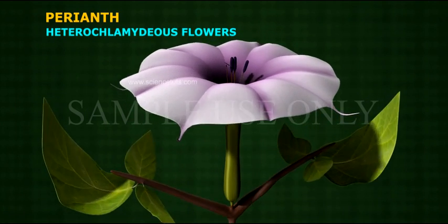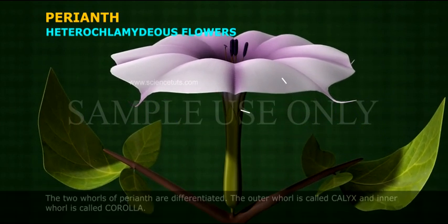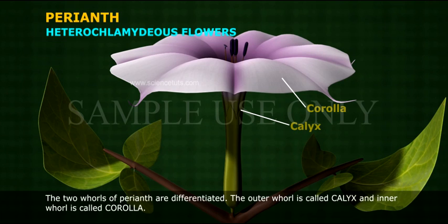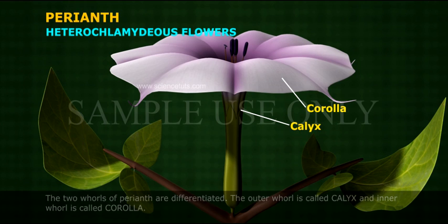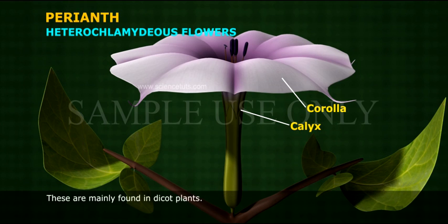Heterochlamydeous flowers: The two whorls of Perianth are differentiated. The outer whorl is called Calyx and the inner whorl is called Corolla. These are mainly found in dicot plants.